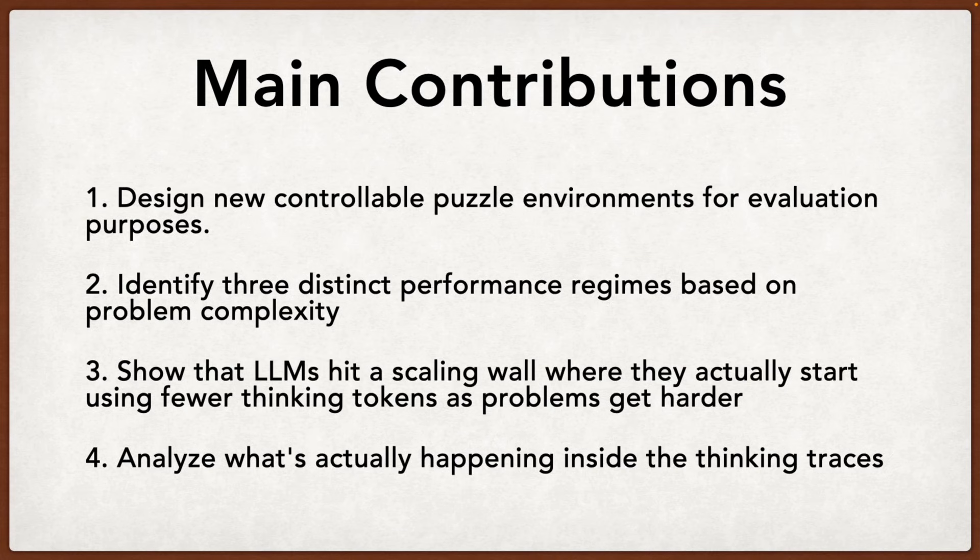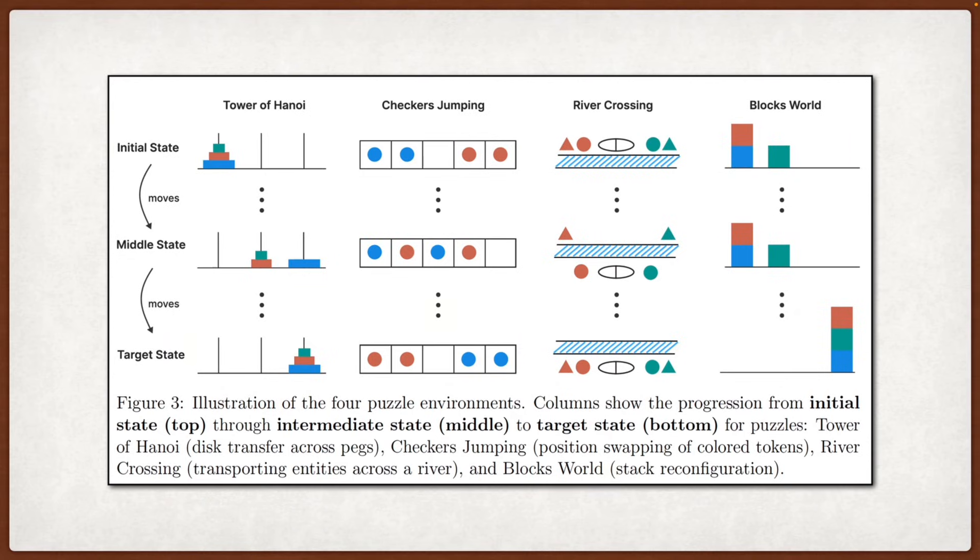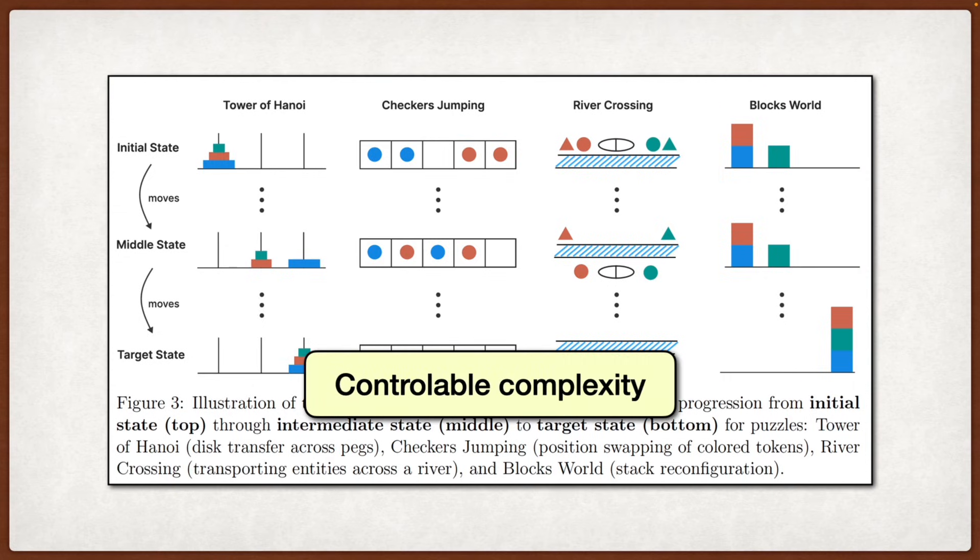Now let's talk about how they actually test these models. They use four different puzzle environments. Tower of Hanoi, which is the classic disk moving puzzle. Checker jumping, where you swap positions of colored checkers. River crossing, where you must transport people or objects across a river using a boat with limited capacity while following specific constraints about who or what can be together. And blocks world, where you rearrange stacks of blocks.